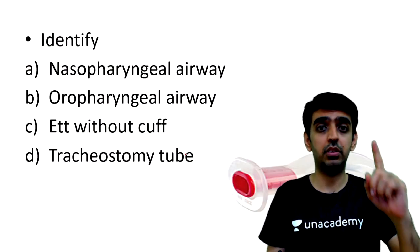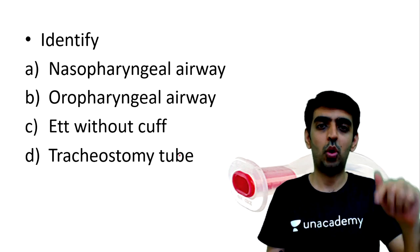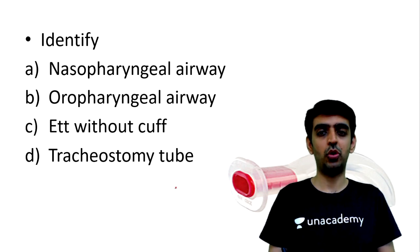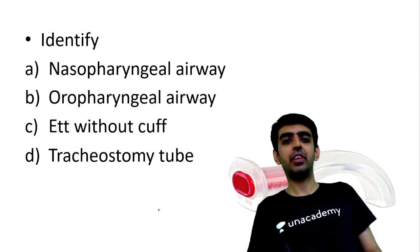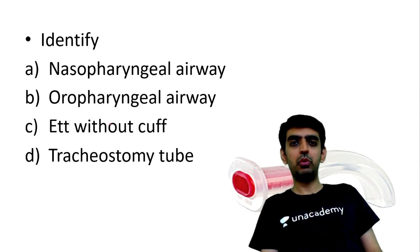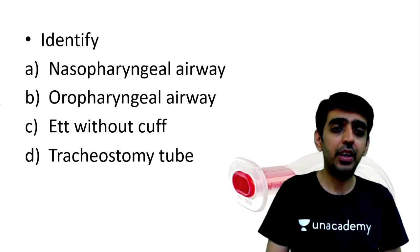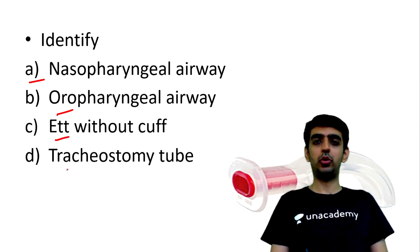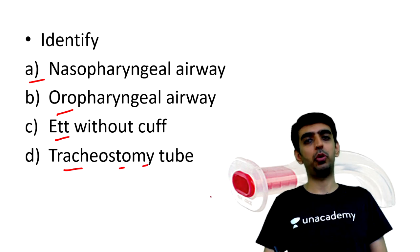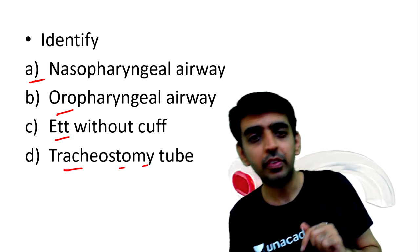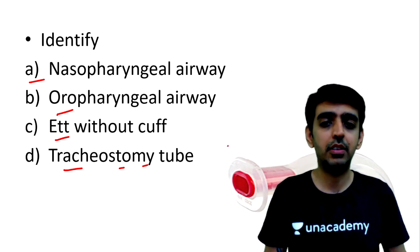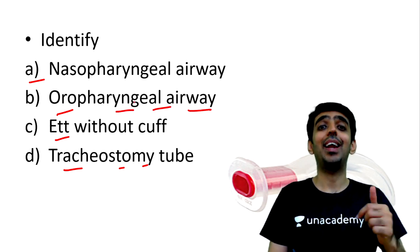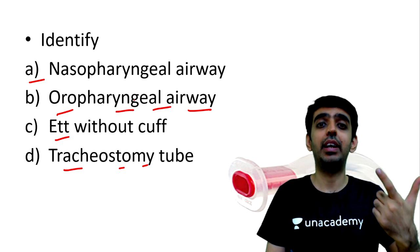Let's begin today's image-based session. First question: identify the instrument shown on your screen. The options are: A) nasopharyngeal airway, B) oropharyngeal airway, C) endotracheal tube without curve, D) tracheostomy tube. The correct answer is B — this is an image of an oropharyngeal airway.